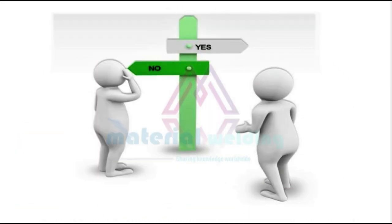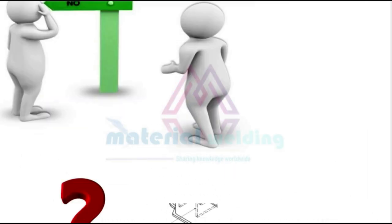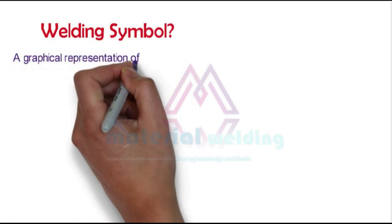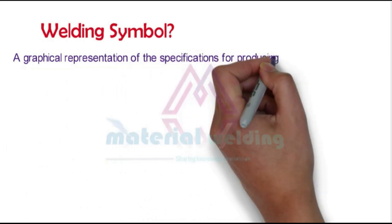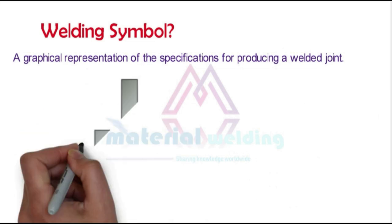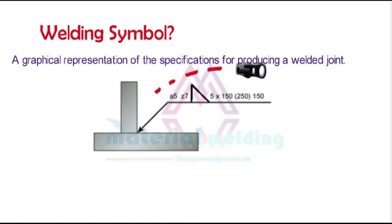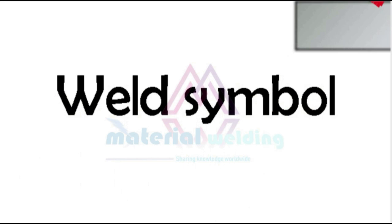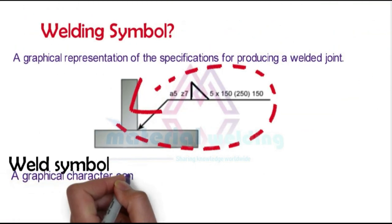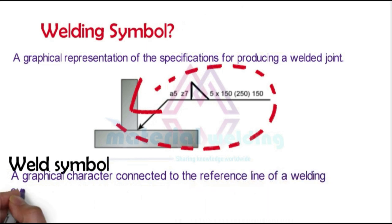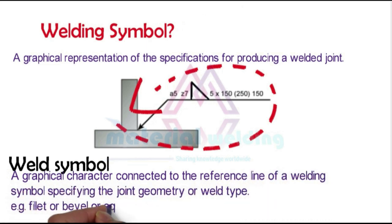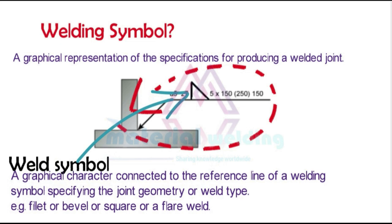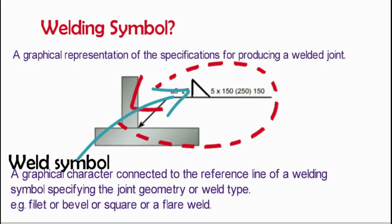There is always confusion between weld symbol and welding symbol. A welding symbol is a representation of the specifications for producing a welded joint. For example, this picture shows the welding symbol of an intermittent fillet weld of 5 mm throat size or 7 mm leg length. A weld symbol is a graphical character connected to the reference line of a welding symbol, specifying the joint geometry or weld type — for example, a fillet weld, bevel, square, or flare weld. In this welding symbol, the triangle represents the weld symbol. So the weld symbol is a part of the welding symbol.